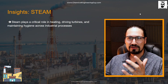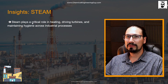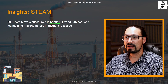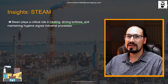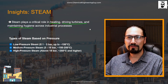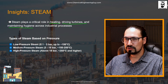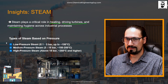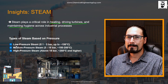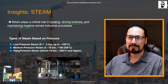Steam plays a crucial role in heating and driving turbines. There are three main types of steam lines, and they are typically categorized by their pressure: low pressure steam, medium pressure steam, and high pressure steam.